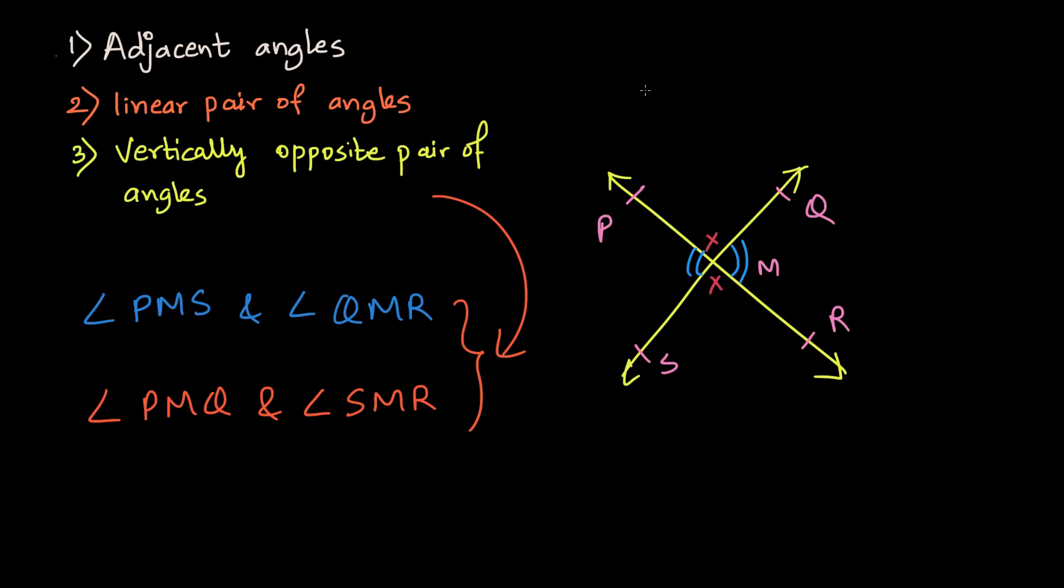I always enjoy looking at the real world and finding out adjacent, linear pair, or vertically opposite pair of angles. It's just interesting to see a clear example of such kind is a traffic square. Where else do you see adjacent and linear pair of angles in real life? Comment down below.